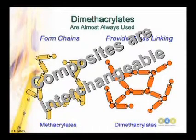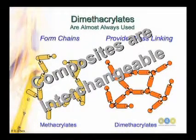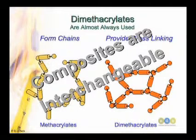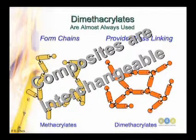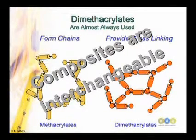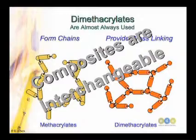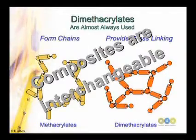If you like the color or the properties of one material and another one, you can combine them together in a single restoration. Most of the bonding agents are also interchangeable with different composites — you can use any company's bonding agent with any company's composite and pretty much get a seamless integration.